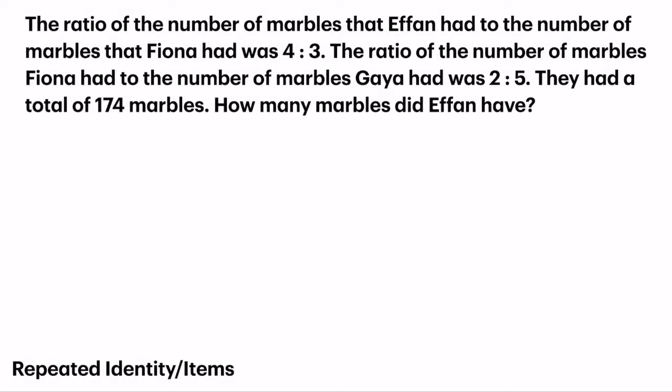Now let us try with a few questions. The ratio of the number of marbles that Yvonne had to the number of marbles that Fiona had was 4 to 3. The ratio of the number of marbles Fiona had to the number of marbles Gaia had was 2 to 5. Now, using the concept of repeated identity or items, who is the common person in both ratios? Fiona. Which means that the units should be the same. So now I'm going to change it to a common multiple of 3 and 2, which is 6.